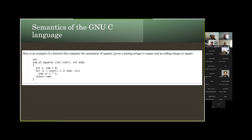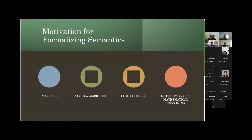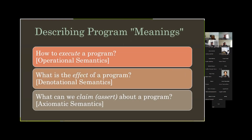The first question was to convince students that some more formalism is needed. The problem with informal semantics is that they are verbose, can be ambiguous since natural language is inherently ambiguous, and you may have left parts of the semantics uncovered. Most importantly, informal semantics is not suitable for mathematical reasoning. So the idea was to tell students the ways of describing semantics more formally.